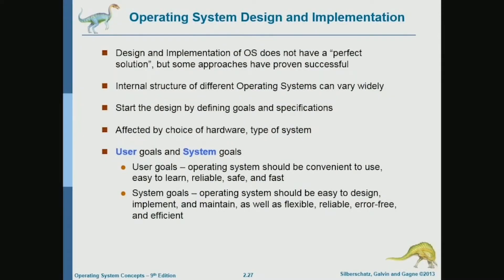When it comes to designing an operating system, there are two kinds of considerations: considerations from the user point of view and considerations from the developer point of view. From the user point of view, the user wants the system to be convenient, fast, and reliable. While there are considerations from the developer point of view that the user doesn't care about, like extensibility, flexibility of the system, and debuggability. These are system goals, not user goals.